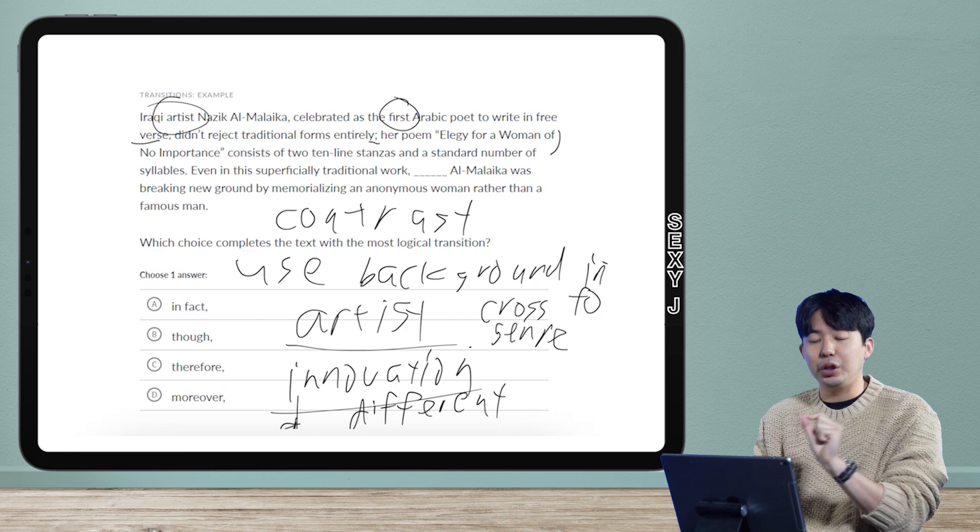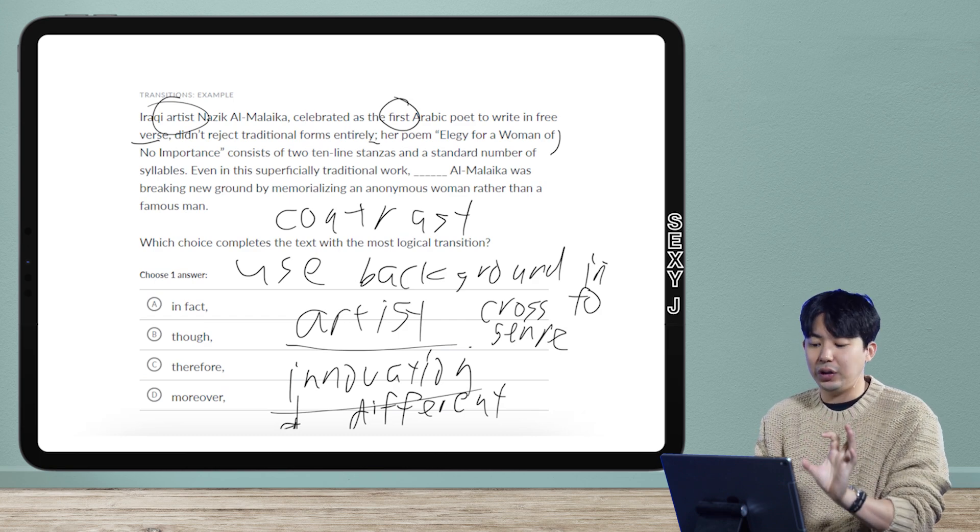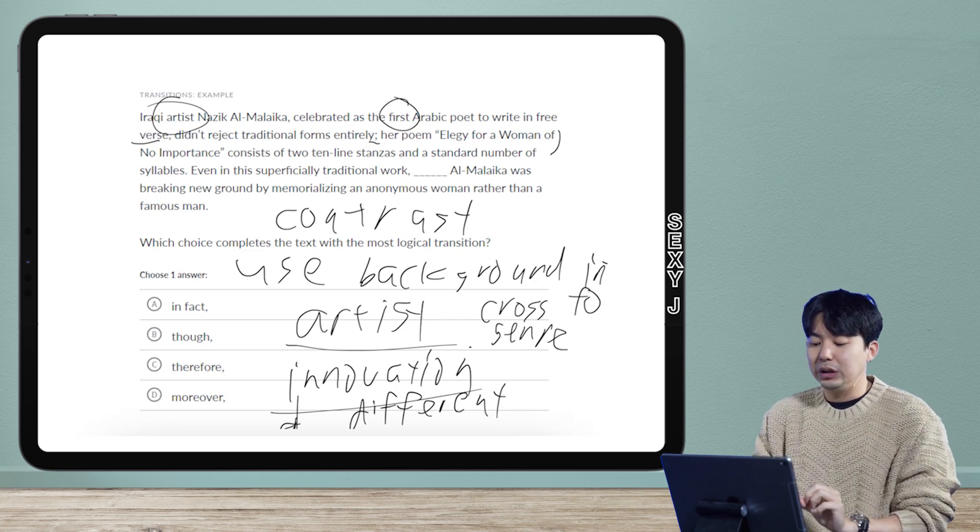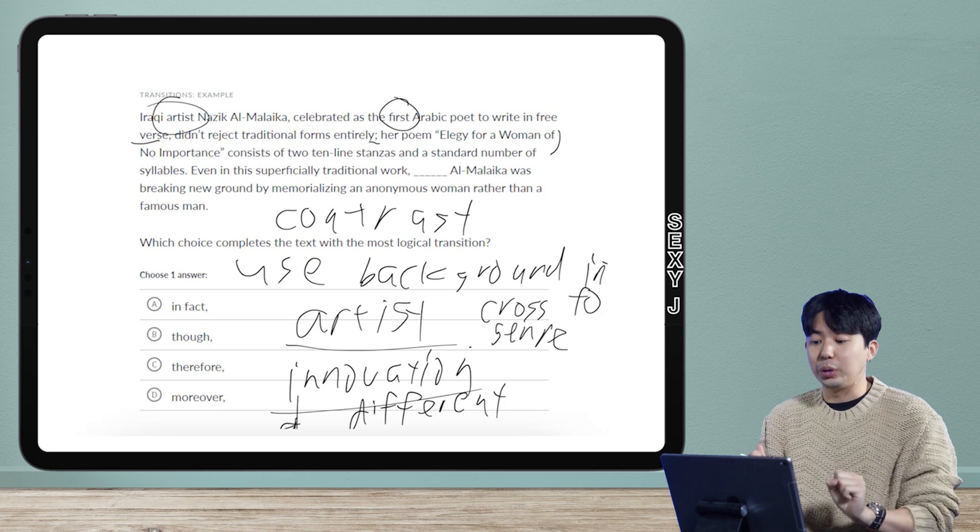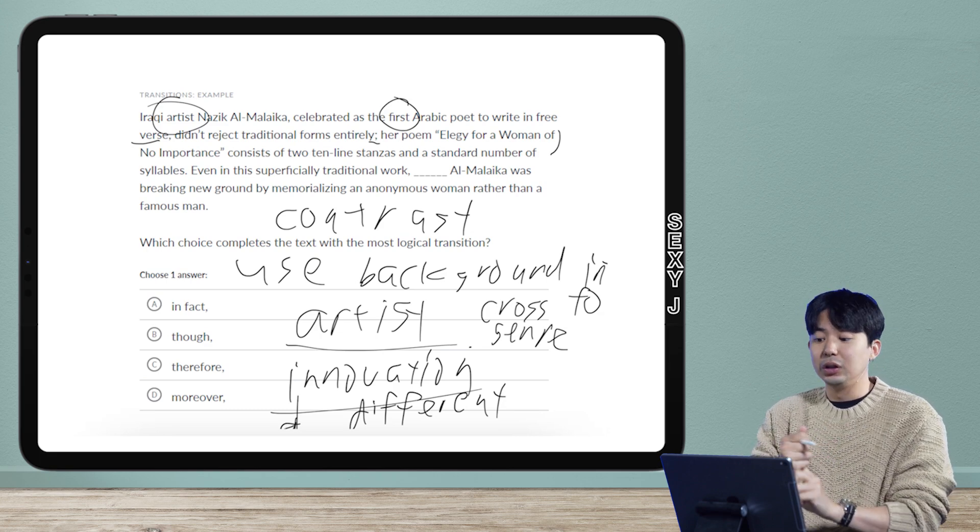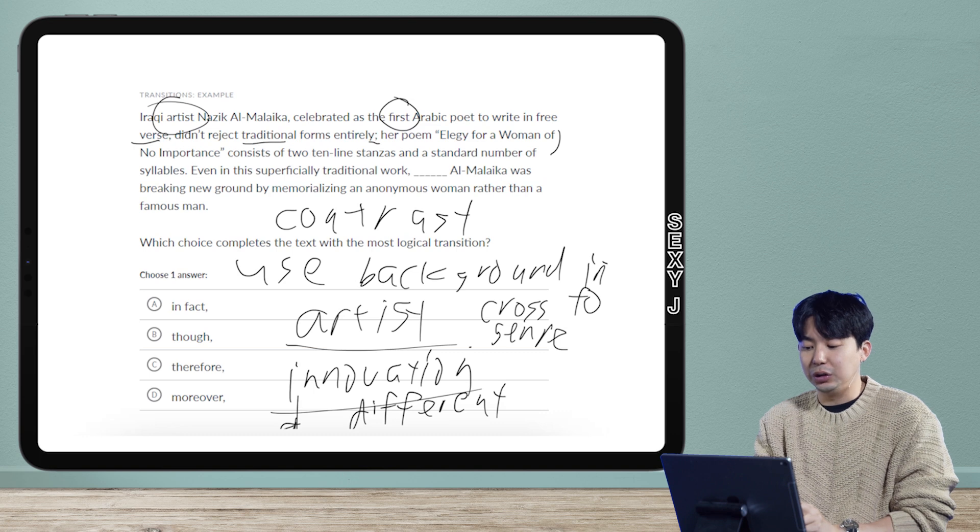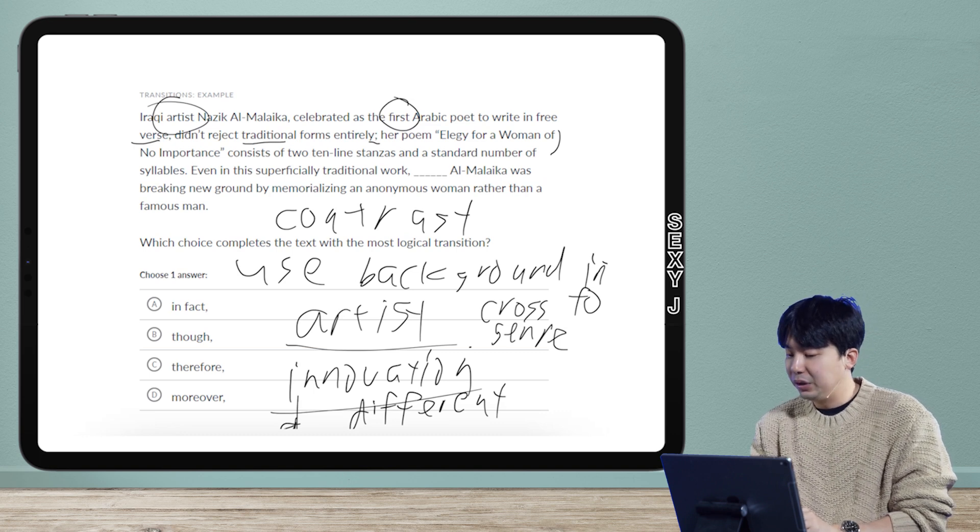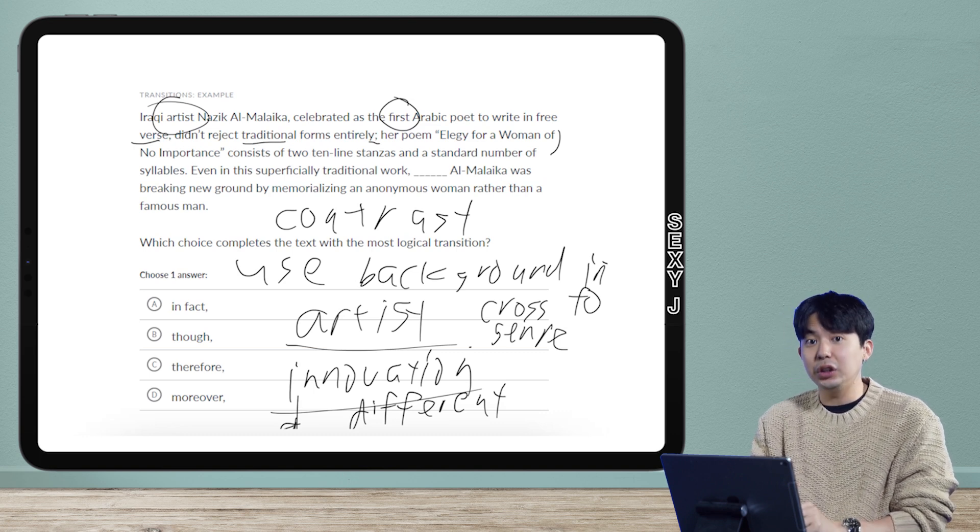She didn't reject traditional forms entirely. They keep going back and forth here, which is I think why a lot of people said this problem made no sense. First idea: she was the first to do something. Second: she did have some tradition.